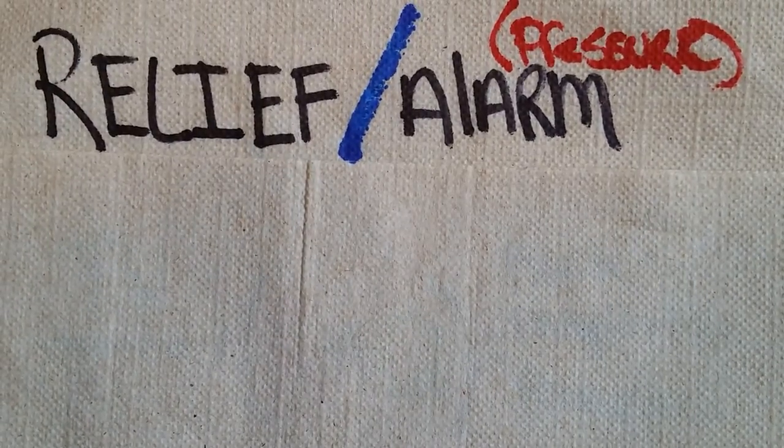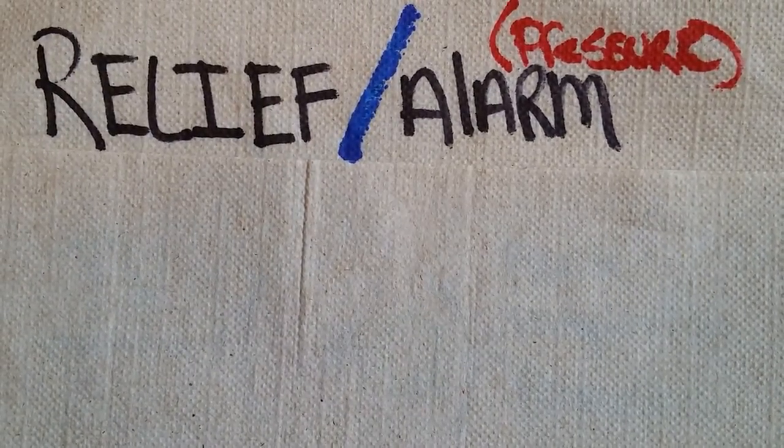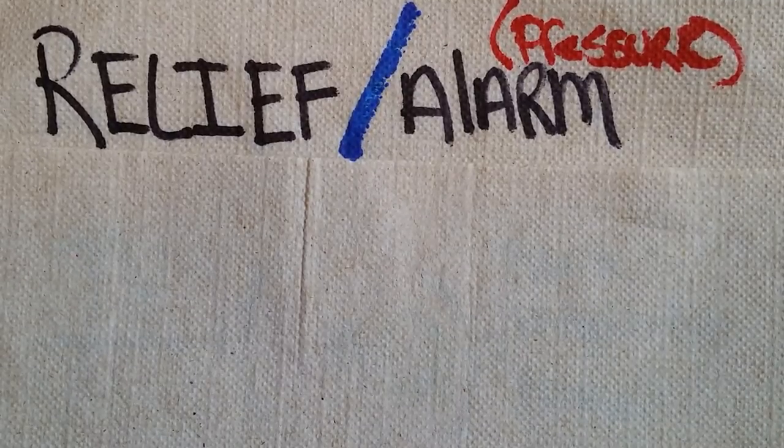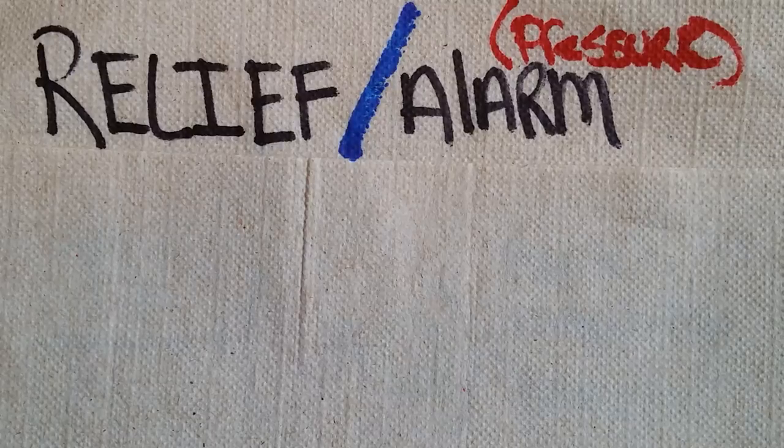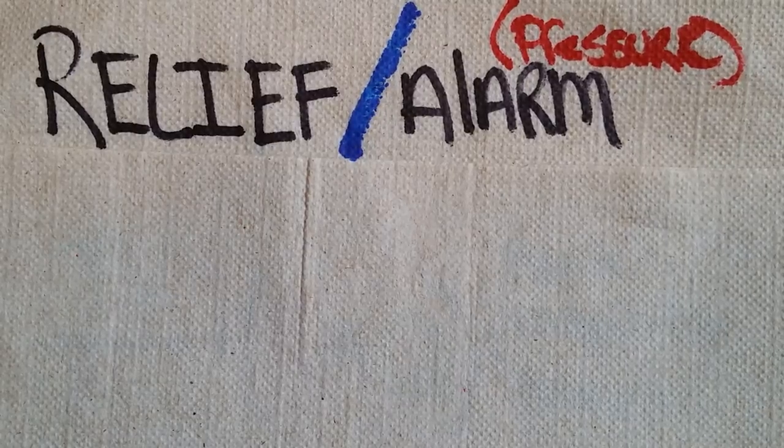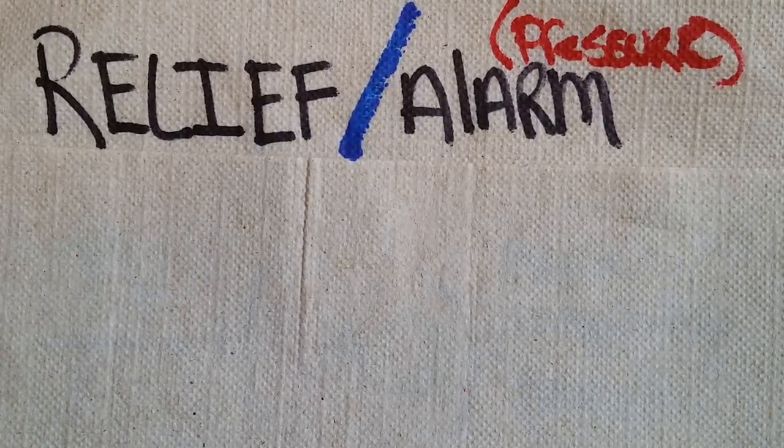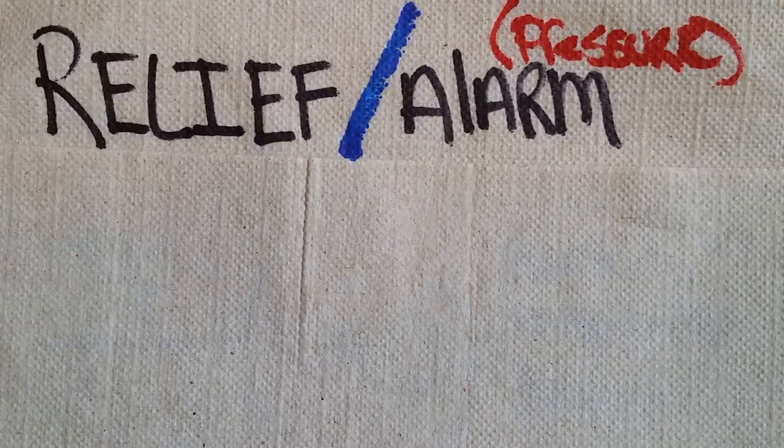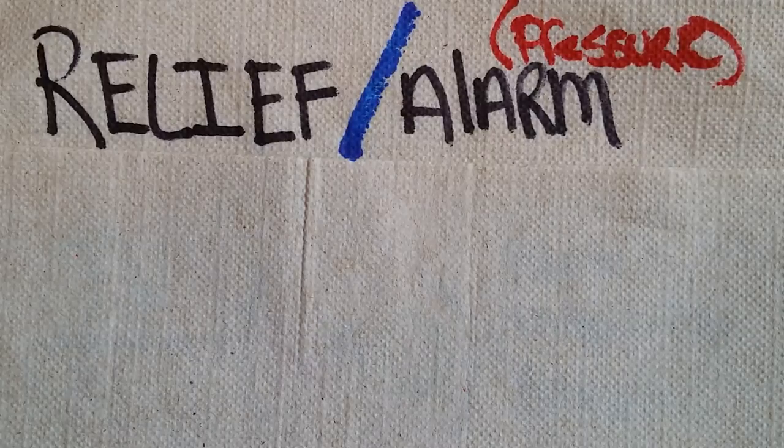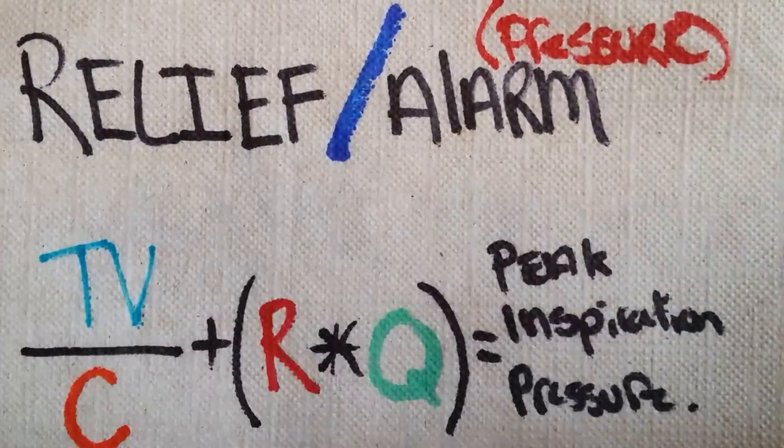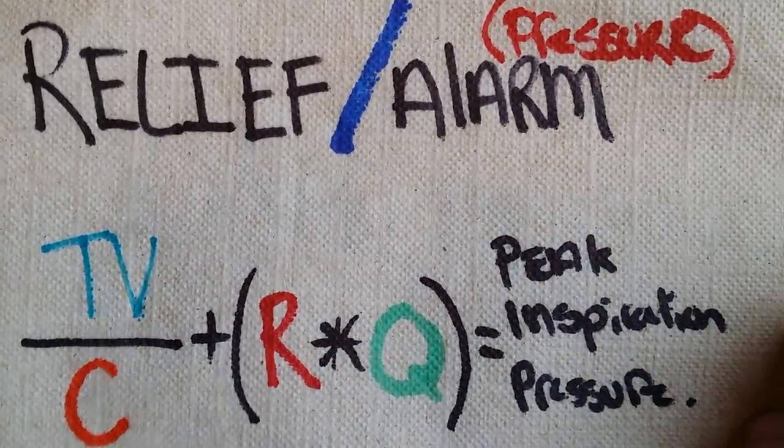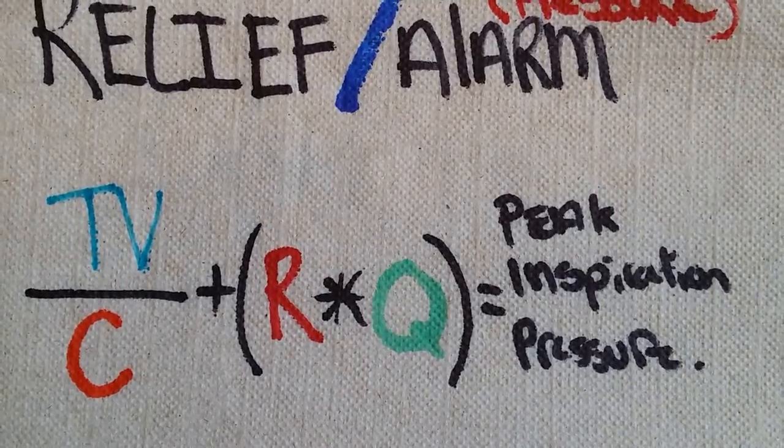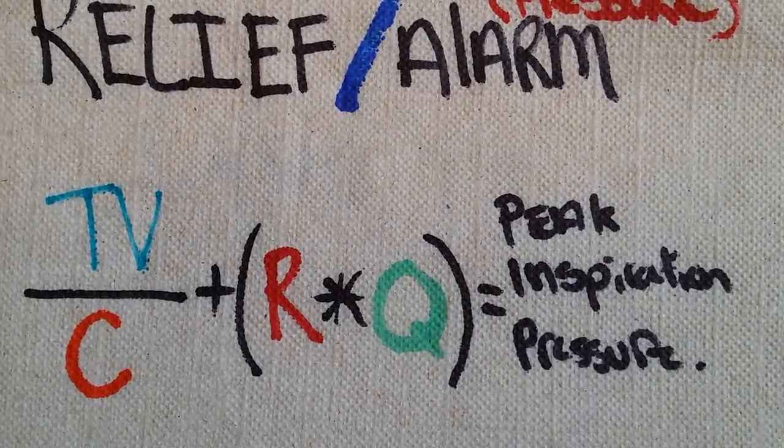Today we're going over relief alarm pressure. With relief alarm pressure, that's the pressure you're going to hear on your vent. Say you are in the field on a bus or transport unit and you just successfully resuscitated a patient and put them on a ventilator. We're going to talk about that PIP alarm, or peak inspiration pressure alarm. And this is the equation to it.